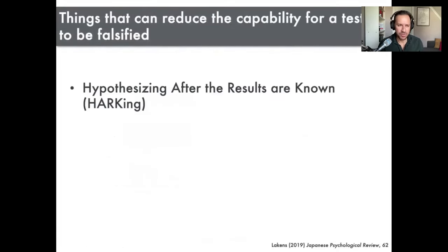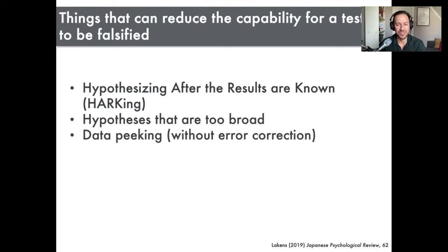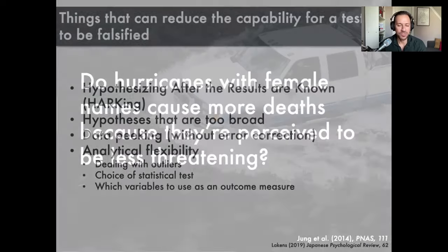There are a number of things which reduce the capability for a test to be falsified. One is HARKing — hypothesizing after the results are known. Another is hypotheses that are too broad. Historically, as hypothesis testing became more important, people made very broad hypotheses, like 'this intervention is going to reduce depression symptoms' — but which scale are you going to use to measure that? Maybe one of several administered scales demonstrates a difference by chance. There's also data peeking without error correction, and analytical flexibility in how you deal with outliers, your choice of statistical test, and which variables you use as outcome measures.